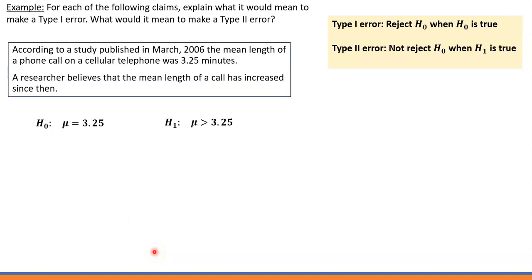Let's try another example. According to a study published in March 2006, the mean length of a phone call on a cellular telephone was 3.25 minutes — H0: mu = 3.25. The researcher believes the mean length of a call has increased since then — H1: mu > 3.25.